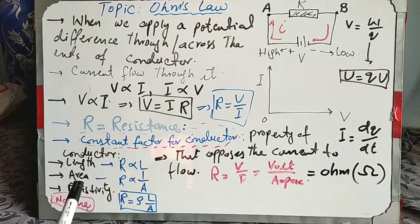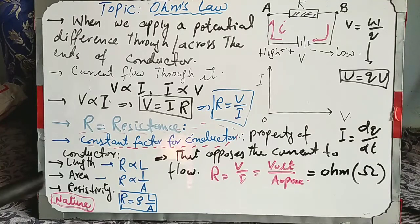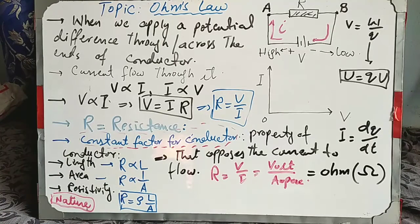Now, like MCQs asked about capacitance — if we change the physical parameter, double the area, reduce the distance — similarly for resistance MCQs: if we double the length, or reduce the area, this formula gives the factors. If we double the area, resistance becomes half. If we double the length, resistance doubles. Resistivity is a constant — it is the nature of the material and cannot be changed without changing the material.